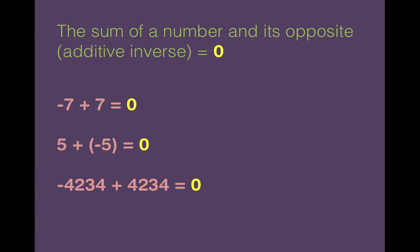The sum of a number and its opposite, or you could say it in a fancy way, the additive inverse, is equal to 0. So let's remember that when you add a number to its opposite, you get 0.